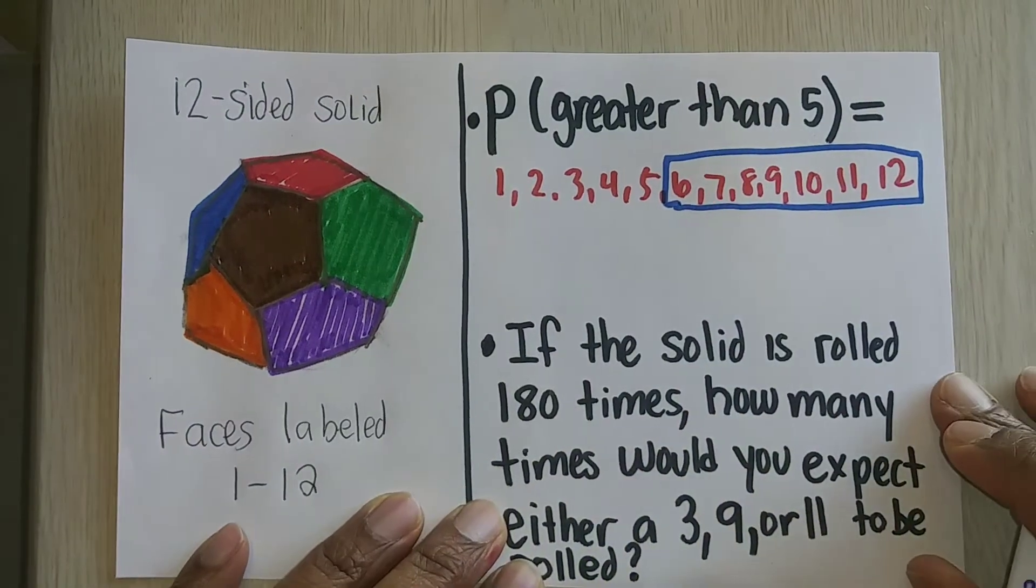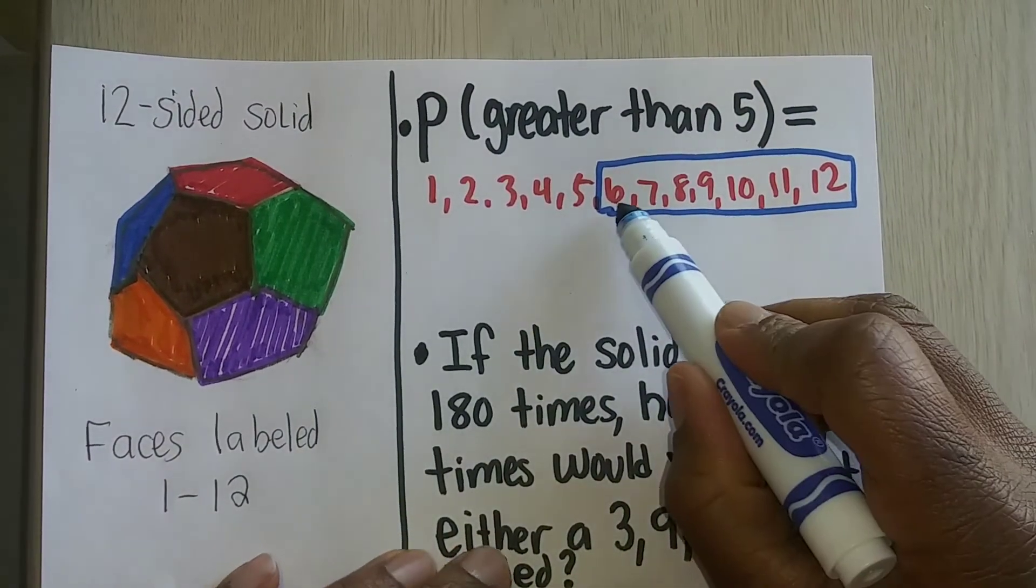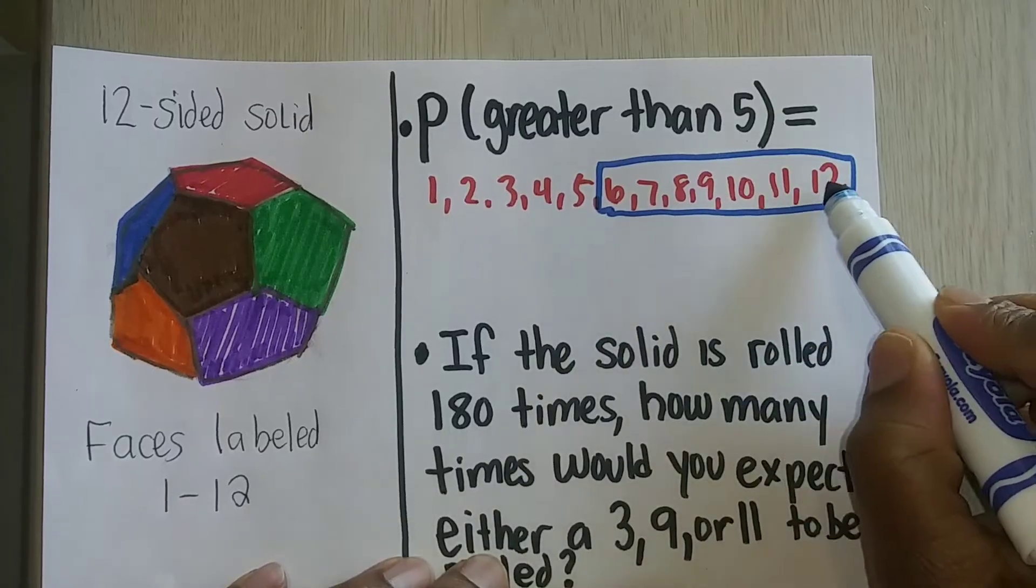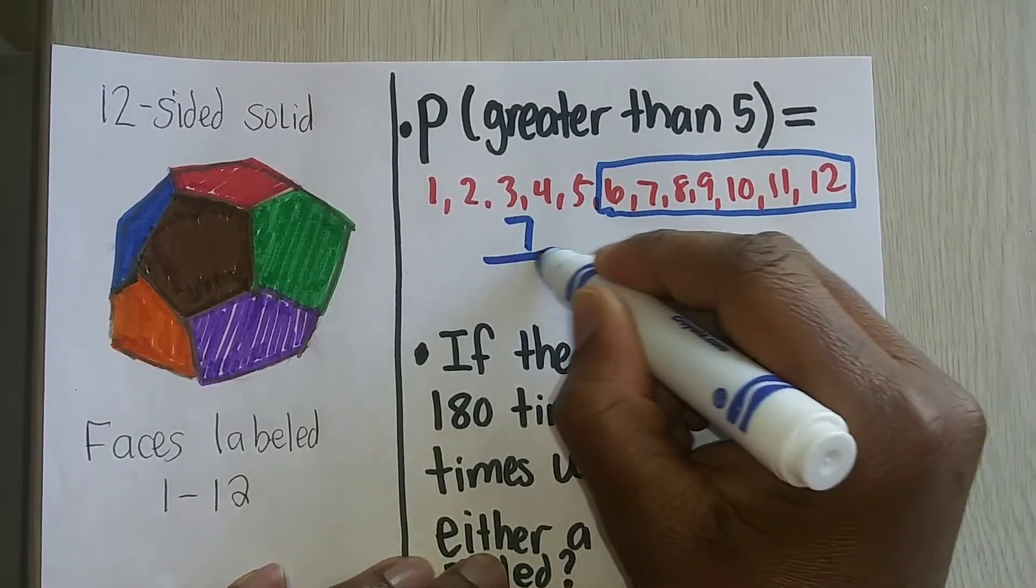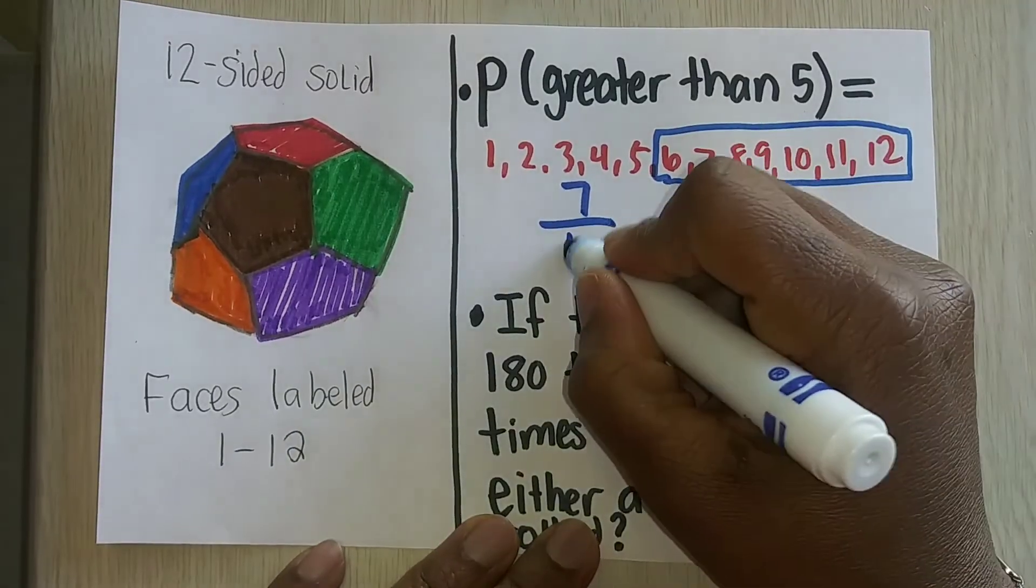So if I take a look at these, and the ones that's greater than 5, there are 1, 2, 3, 4, 5, 6, 7 different outcomes out of a total of 12 faces.